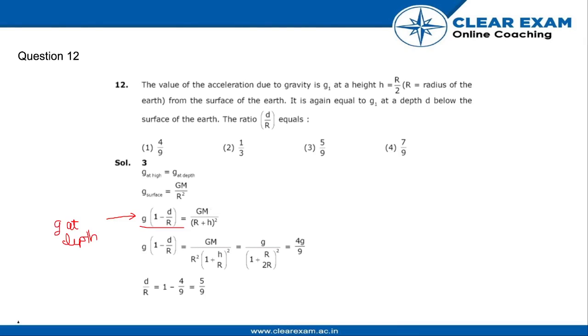This is equal to g at height, which is GM by r plus h square, which can be written as GM over r square times 1 plus h by r whole square, after taking r square common.